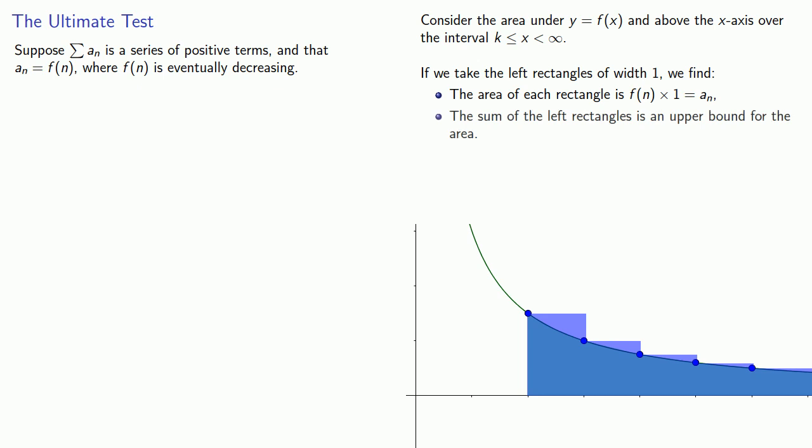And because our function is decreasing, these left rectangles will form an upper bound for the area. And this means that the integral from k to infinity of f of x dx will be less than or equal to the series sum from k to infinity of a n.